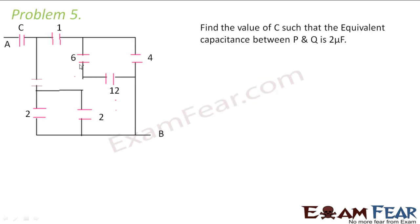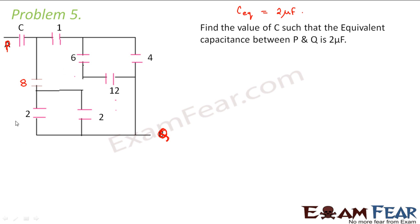So let us look at another problem. Find the value of C such that the equivalent capacitance between P and Q is 2 microfarads. There is a printing mistake here — this point is P and this point is Q. So the equivalent capacitance between P and Q is 2 microfarads. You have to calculate the value of C. One more thing is missing here: that value is 8. So they are all in microfarads, the values which are given here.